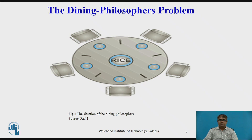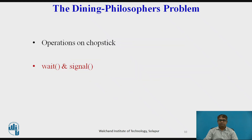A philosopher cannot pick up a chopstick already in the hand of a neighbour. When a hungry philosopher has both chopsticks at the same time, she eats without releasing them. When she is finished eating, she puts down both chopsticks and starts thinking again. The dining philosophers problem is considered a classic synchronization problem — not because of its practical importance, nor because computer scientists dislike philosophers, but because it is an example of a large class of concurrency control problems. It is a simple representation of the need to allocate several resources among several processes in a deadlock-free and starvation-free manner.